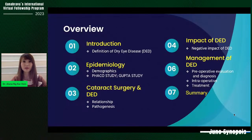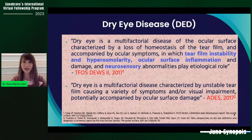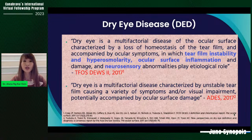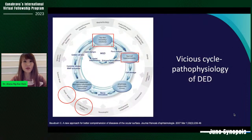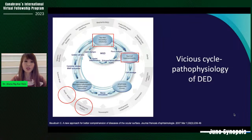This is the overview for today. Dry eye is a multifactorial disease of the ocular surface. The TFOS-DUS2 in 2017 elicited many etiologies of tear film instability, hyperosmolarity, ocular surface inflammation, and neurosensory abnormalities, which all cause the loss of homeostasis of the tear film, accompanied by ocular symptoms. The Asia Dry Eye Society has also described dry eye as a multifactorial disease characterized by unstable tear film causing a variety of symptoms.